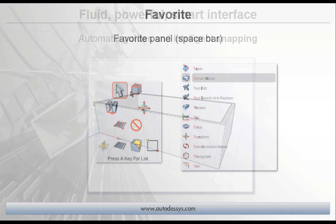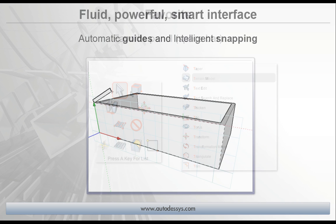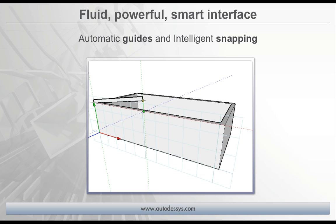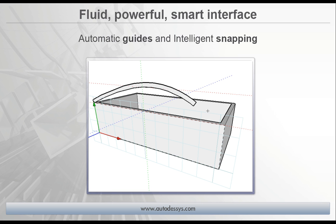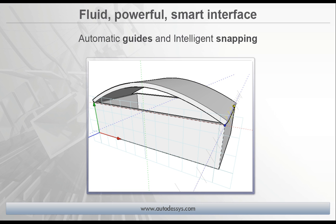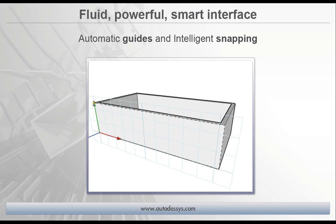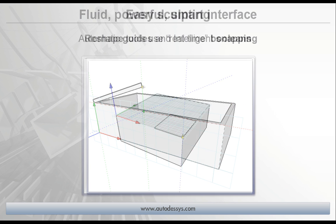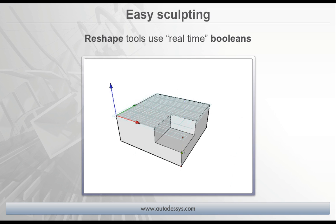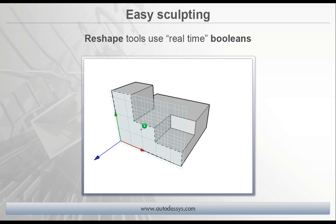Form Z has a new fluid, powerful, and smart interface, which is optimized through automatic guides and intelligent snapping. These automatic drawing features drastically simplify and speed up the modeling process. There's also all sorts of new reshaping tools, which let you easily sculpt your objects.